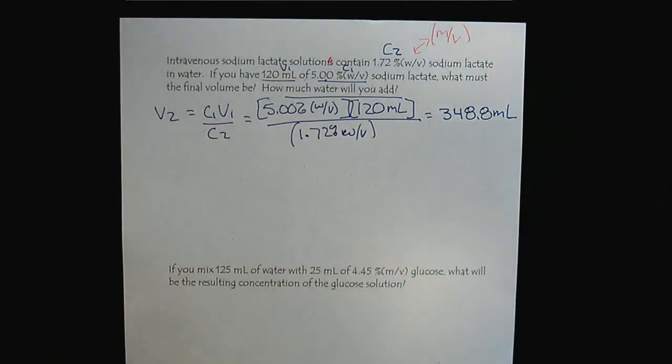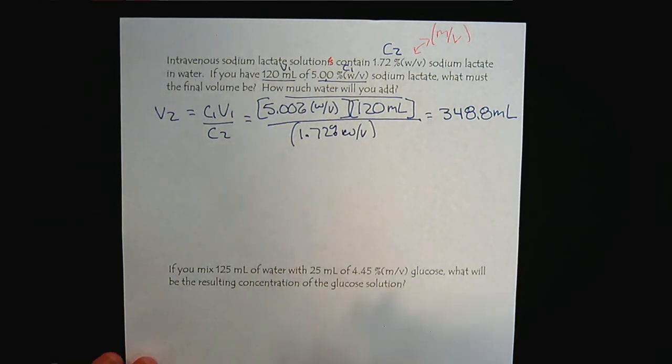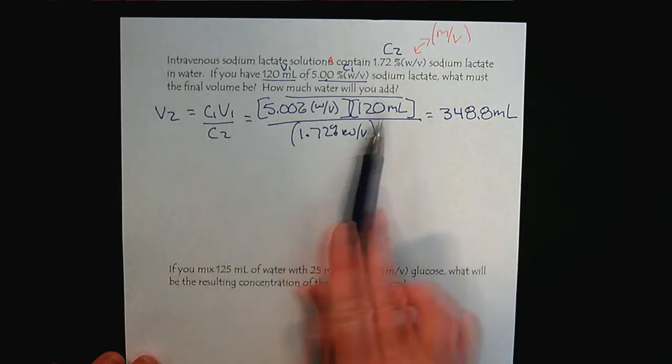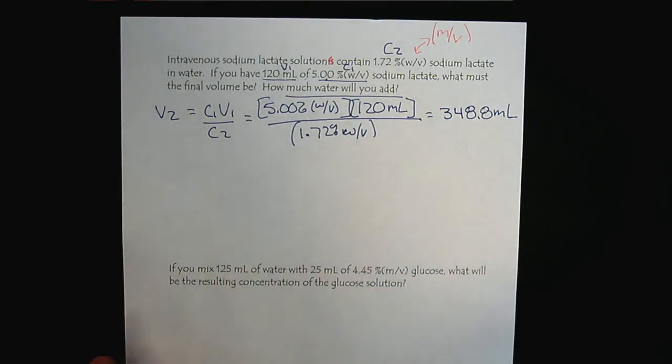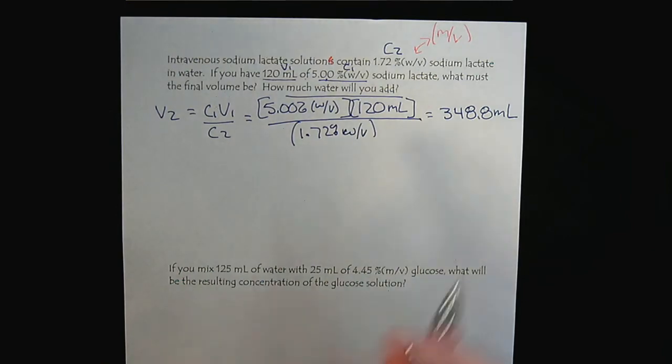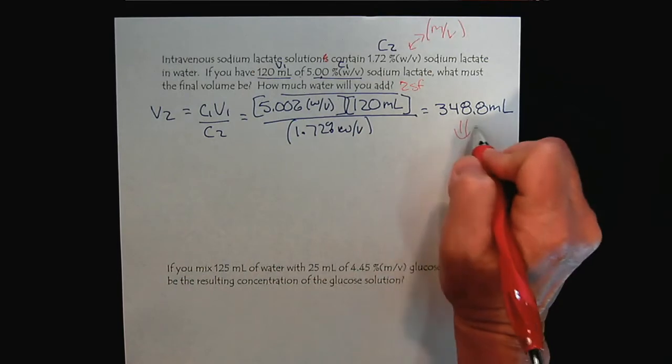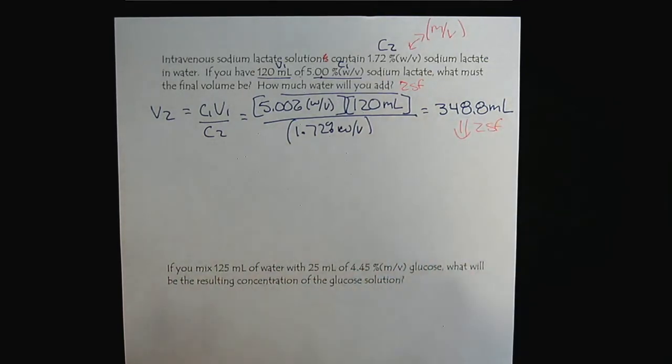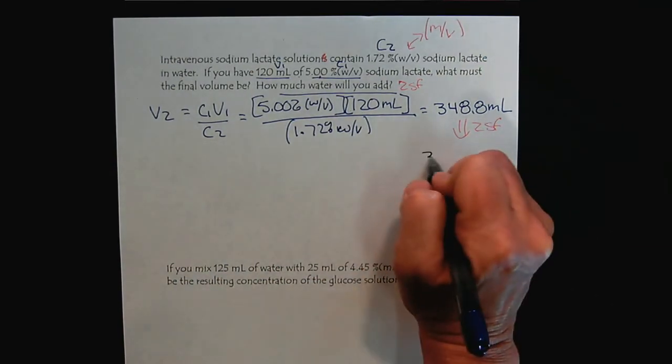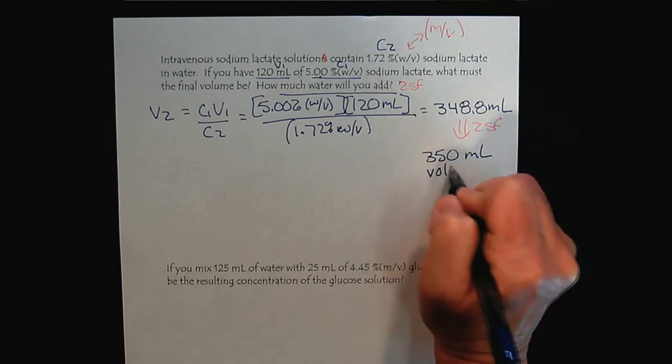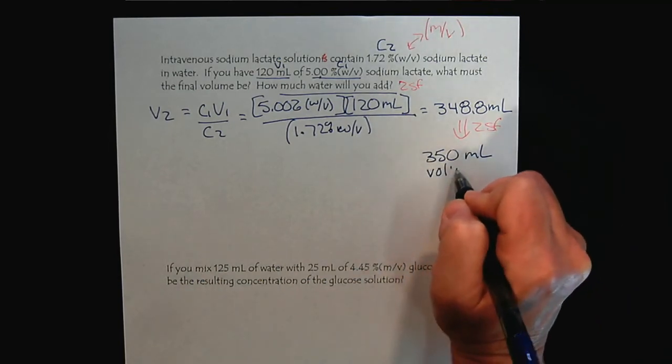Now this one's going to give us a little more work. Sig figs. We have 3 sig figs, 2 and 3. The 2 sig fig data is going to limit our result. We're going to end up needing 350 milliliters will be the volume of solution.